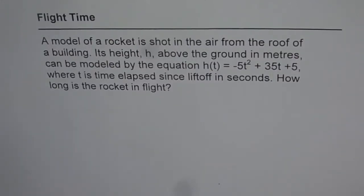Flight time. A model of a rocket is shot in the air from the roof of a building. Its height h above the ground in meters can be modeled by the equation h(t) = -5t² + 35t + 5, where t is time elapsed since liftoff in seconds. How long is the rocket in flight?